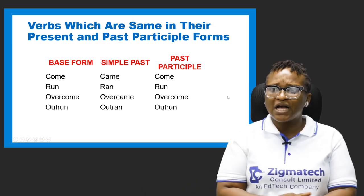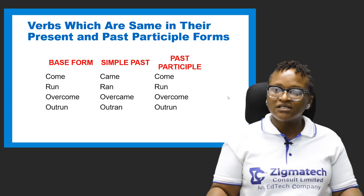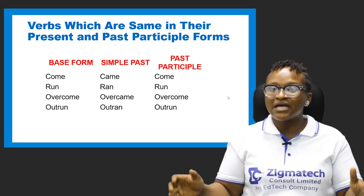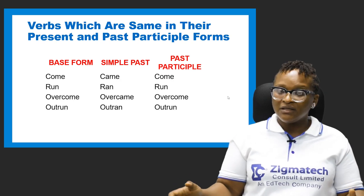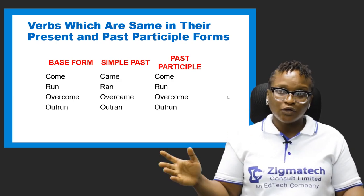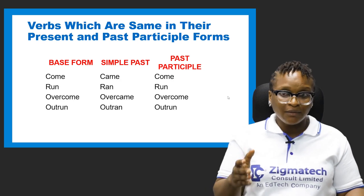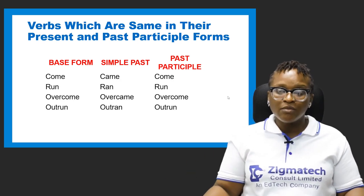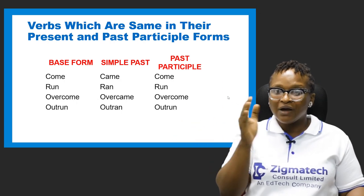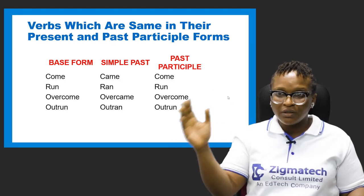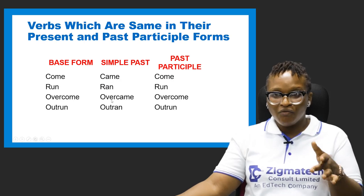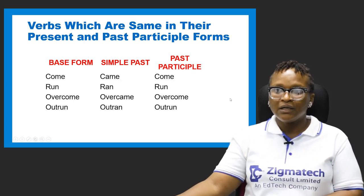We also have verbs which are same in their present and past participle. Basically just four of them: come — past participle: come, simple past: came; run — past participle: run, simple past: ran; overcome — past participle: overcome, simple past: overcame; outrun — past participle: outrun, simple past: outran.